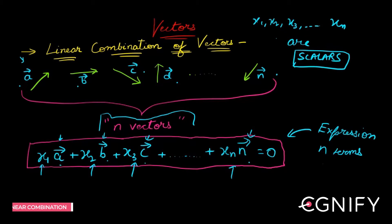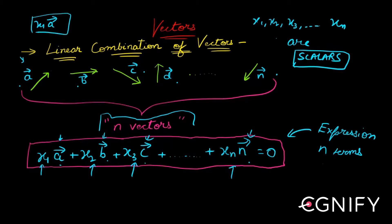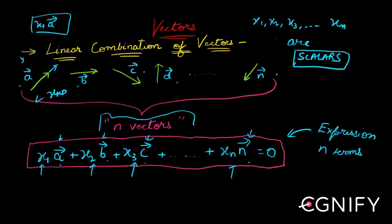If ā is a vector, then x1·ā is another vector. We already know what multiplication of a vector by a scalar does — it changes the magnitude of ā. So ā might become x1·ā, and if x1 is less than 0, the new vector might also point in the opposite direction. If x1 is greater than 0, it will still point in the original direction.